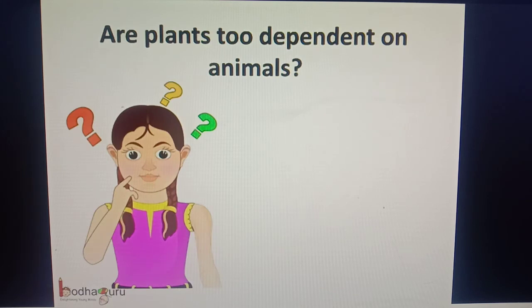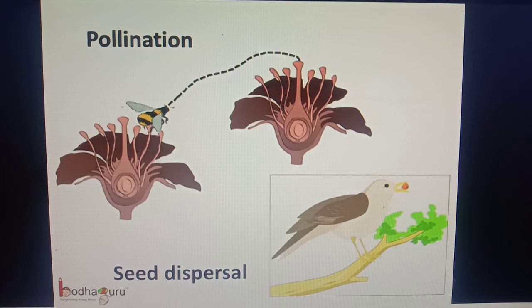You might think: are the plants or the producers too dependent on the animals? Yes, the plants are also dependent on the animals. For example, the insects help in the pollination, which is a must for the seed production and for the plant reproduction. Many animals also help in the seed dispersal.